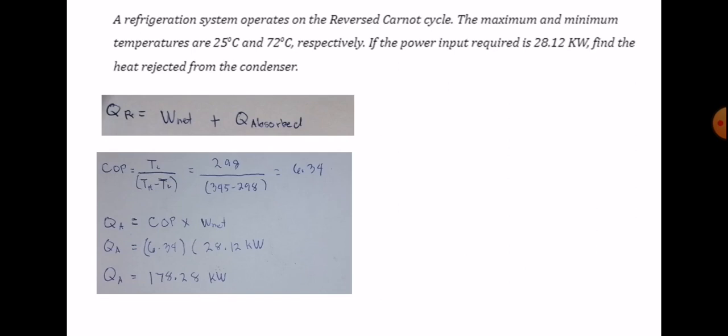The formula for coefficient of performance is TL over (TH minus TL). So 298 Kelvin over (345 minus 298) Kelvin. Our COP is 6.34. Now calculating for our Q absorbed: